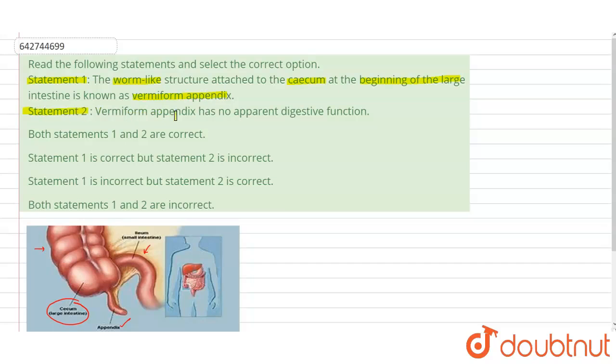So let's find out which of the statements are correct. For that matter, let's first see a diagram which is given here. This is the small intestine, that is the ileum, which is the first part. So this is the ileum.